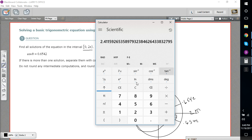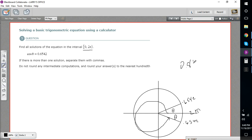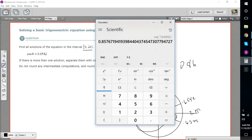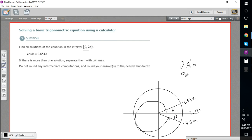So let's try that. First 0.6542, inverse cosine, which gives us 0.86. And then we'll subtract that from 2π. So let's type in π, multiply it by 2, and subtract 0.86. We get 5.42. So those are our two answers there.